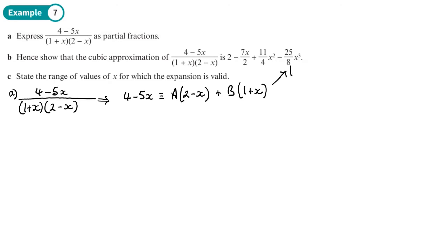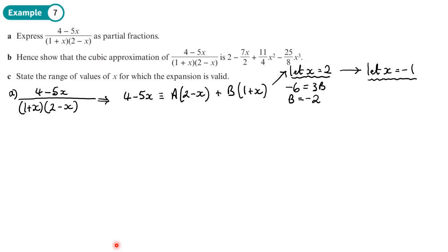First, let x equal 2: the left side gives 4 minus 10, which is negative 6, and the right side gives 3B, so B equals negative 2. Then let x equal negative 1: the left side gives 4 plus 5, which is 9, and the right side gives 3A, so A equals 3.